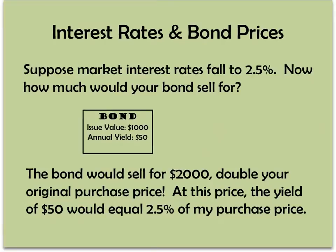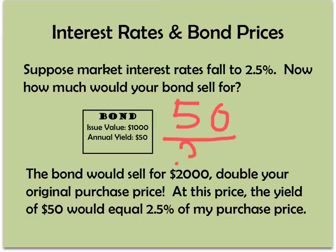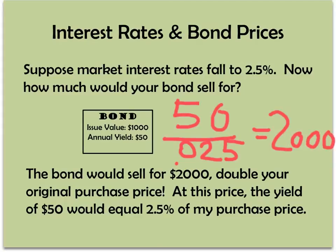Same scenario: you have a bond, you paid $1,000, it pays $50 — that's 5% — and you have to sell it early to fix your transmission. But the prevailing rate for this kind of bond is now 2.5%. You can actually sell your bond for more, because somebody would have to pay more to get a $50 payment in this rate environment. Applying our formula: $50 divided by 0.025 equals $2,000. Because the rate fell by half, your bond increased twofold.